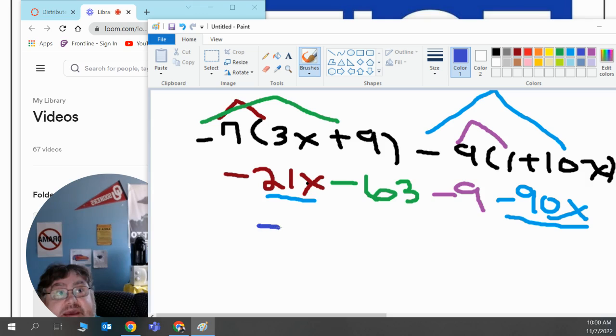That would get me a negative 111x's. That will take care of the variables.